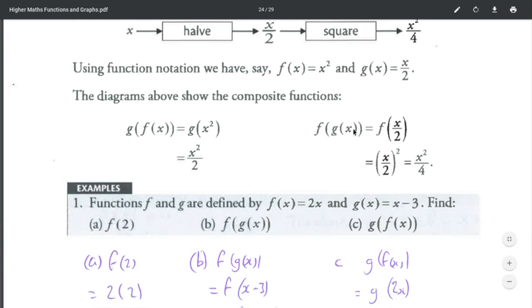Here, F of G of X. Well, what is G of X? G of X is X over 2, X divided by 2. So F of X over 2 says whatever is in the bracket, I replace the X with here. So F of X is X squared. F of 7 would be 7 squared. F of 9 would be 9 squared.